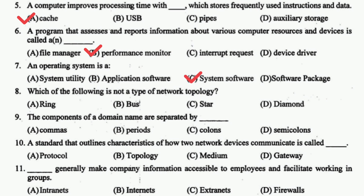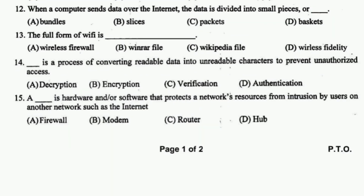An operating system is system software. Which of the following is not a type of network topology? The answer is diamond. The components of a domain name are separated by periods. A standard that outlines characteristics of how two network devices communicate is called a protocol. Intranets make company information accessible to employees and facilitate working in groups.